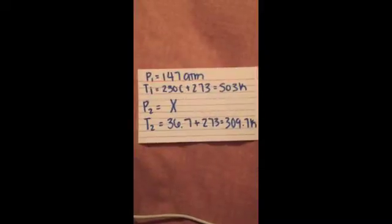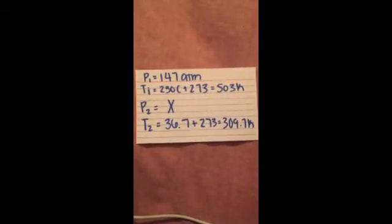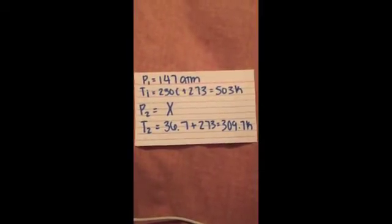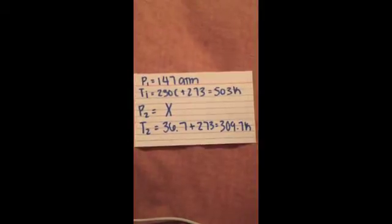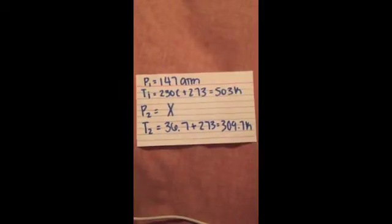P1 is equal to 147 atm. T1, our first temperature, is 230 celsius but in order for it to be kelvin, 273 must be added to it equaling to 503 kelvin.